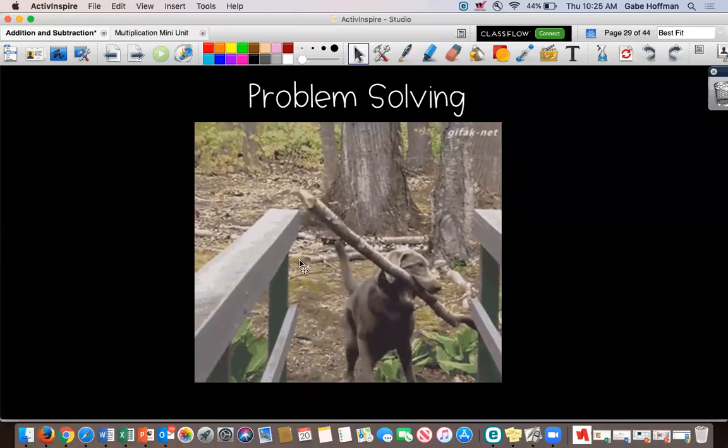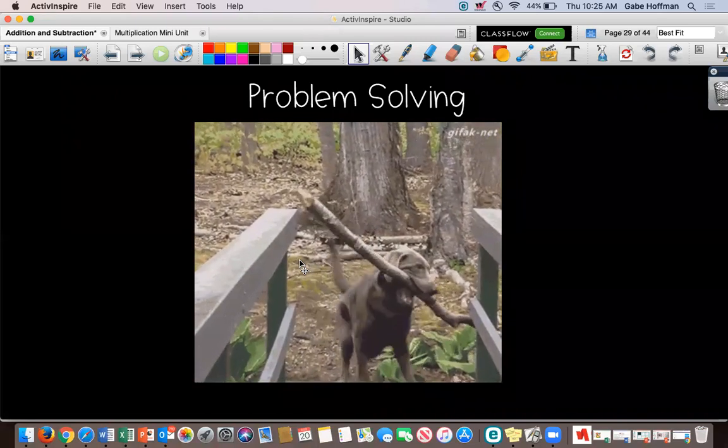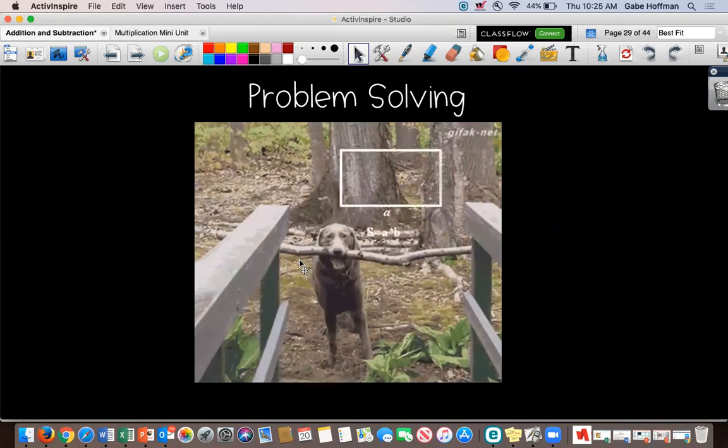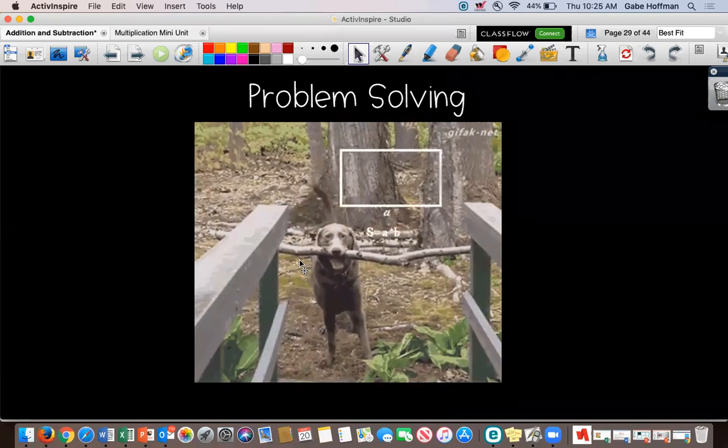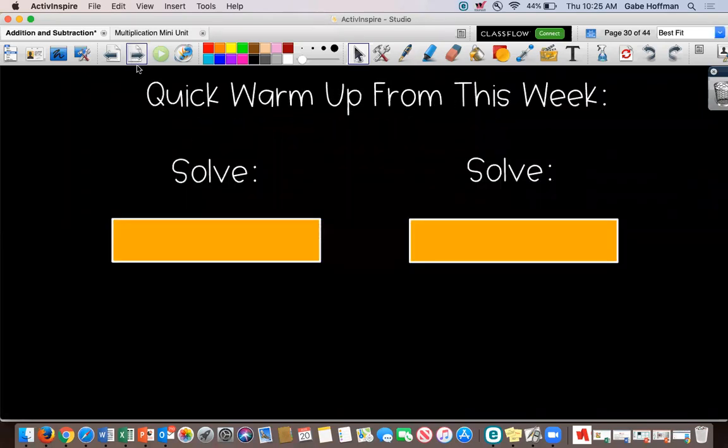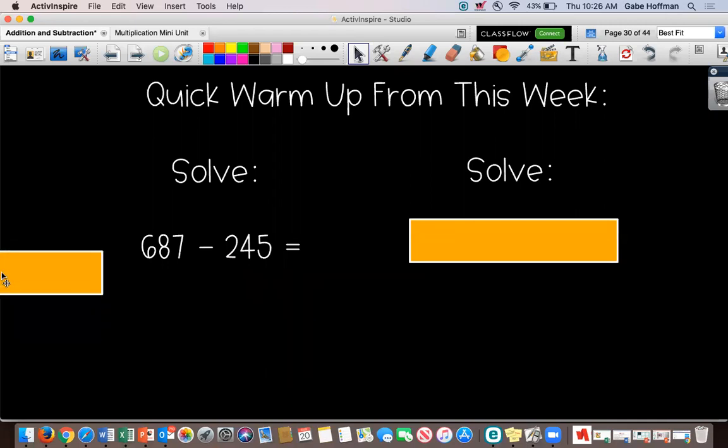So the last few days we've been working on addition and subtraction strategies and just doing the actual math part of that. Today we're going to take the next step and look at how I can use those skills to solve real world problems and questions that come up in word form. Before we do that, I'm going to have you solve two problems just as a quick little warm up. So if you have your whiteboards or a pencil and paper handy, we're going to solve these two problems really quick. We're going to start with 687 minus 245.